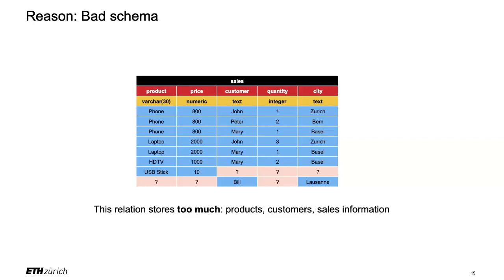The idea, if we want to put into words the reason why this doesn't quite work, is that this relational table stores too much. It has the customer information, the product information, the information of what they bought, and so on. You shouldn't be doing that. The rule of thumb in databases — and this comes from database theory — is that you should have a separate table for everything you need: a separate table for the product, a separate table for the customers, and so on.